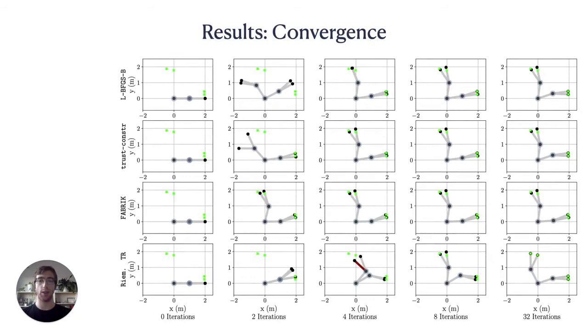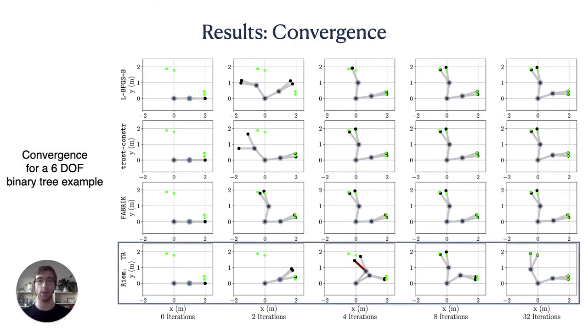In these plots, each row shows the convergence of a different algorithm on a toy six degree of freedom manipulator with position goals. Our algorithm is the only one that is able to reach the correct solution. The other three methods all converge to the same local minimum.